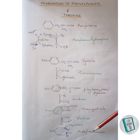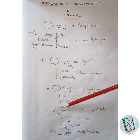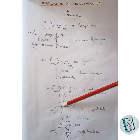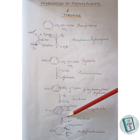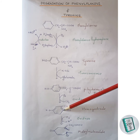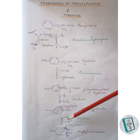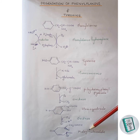This homogentisate then again in the presence of oxidase enzyme forms maleylacetoacetate. Here, in the presence of oxygen, cleavage occurs — this double bond is broken by the oxidase enzyme. One oxygen attaches to this carbon forming a C double bond O, and the other oxygen atom attaches to another carbon forming another C double bond O there. Thus, maleylacetoacetate is formed.